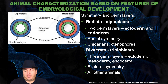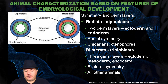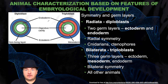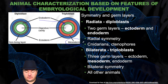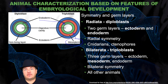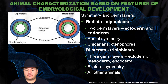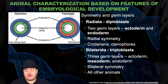Then you have the Bilateria, which are triploblasts. They have three germ layers: the outer ectoderm shown in blue, the inner endoderm shown in green, and between the two, the mesoderm shown in orange. Think meso — middle — that's the middle layer. These are animals with bilateral symmetry, so all other animals. Humans, for example, are Bilateria — we have three germ layers.